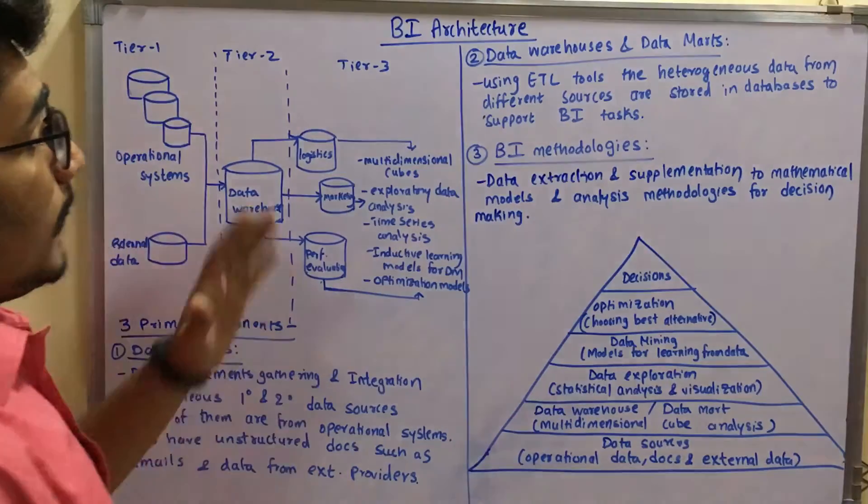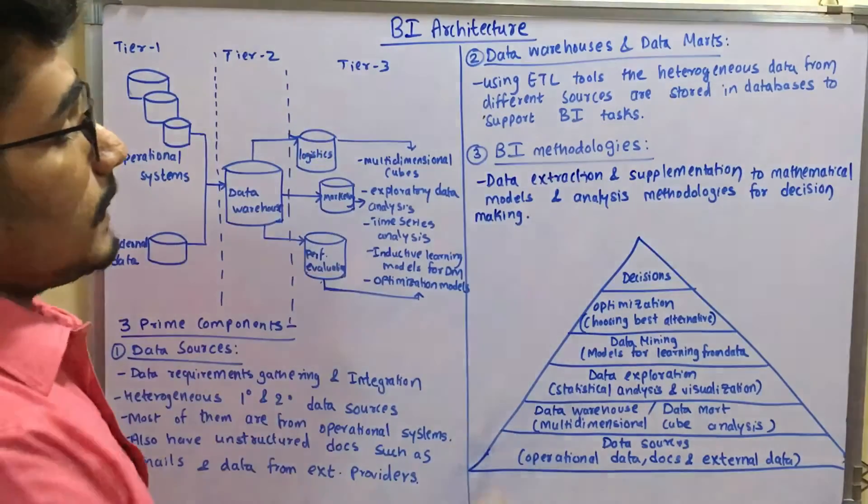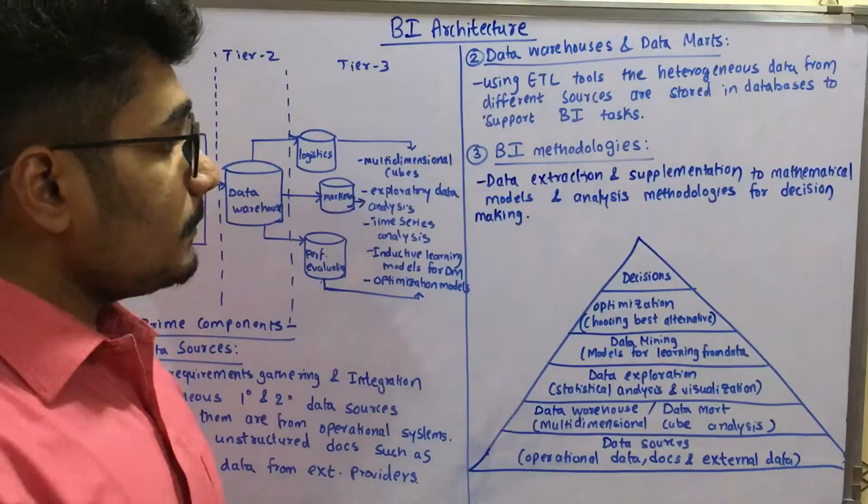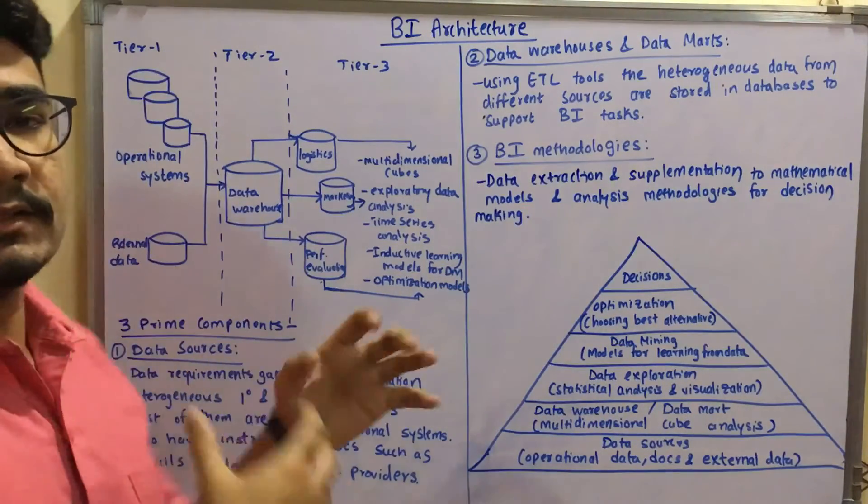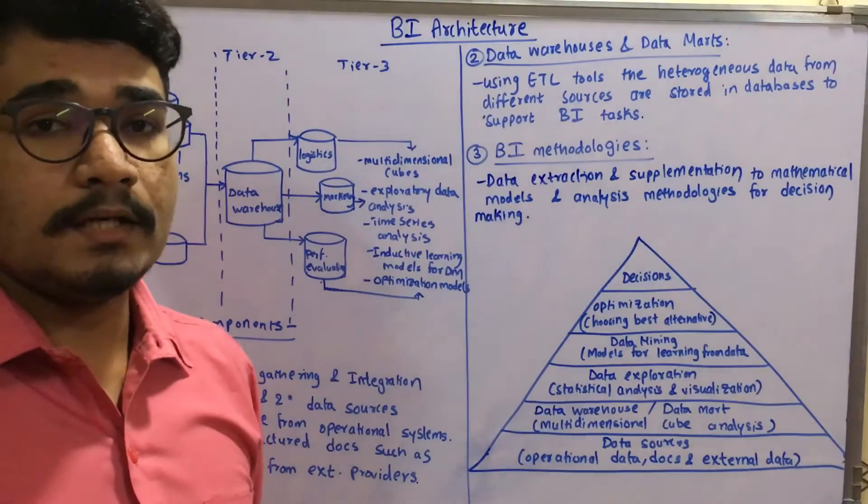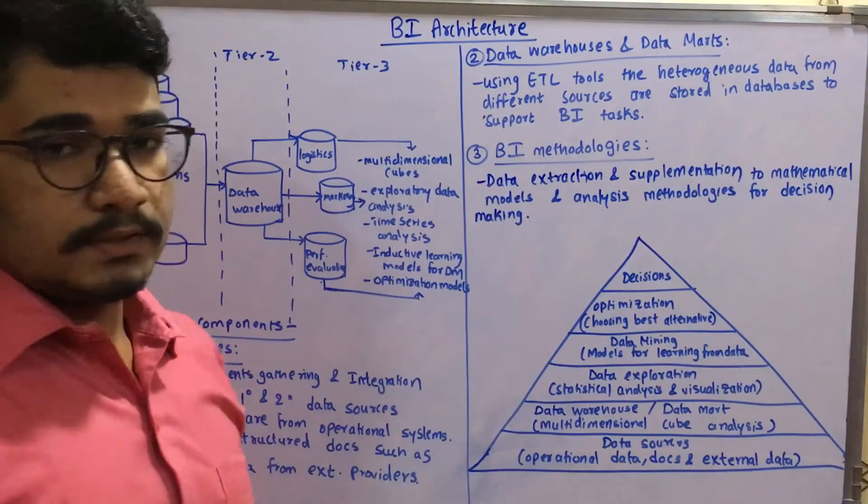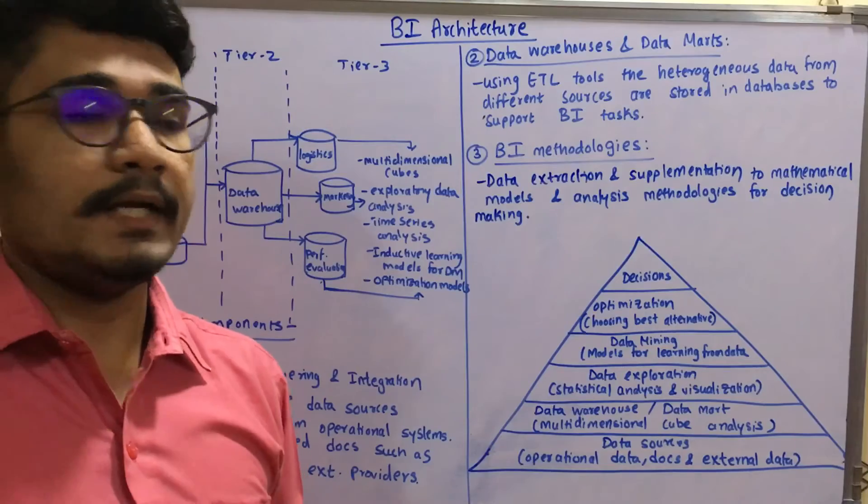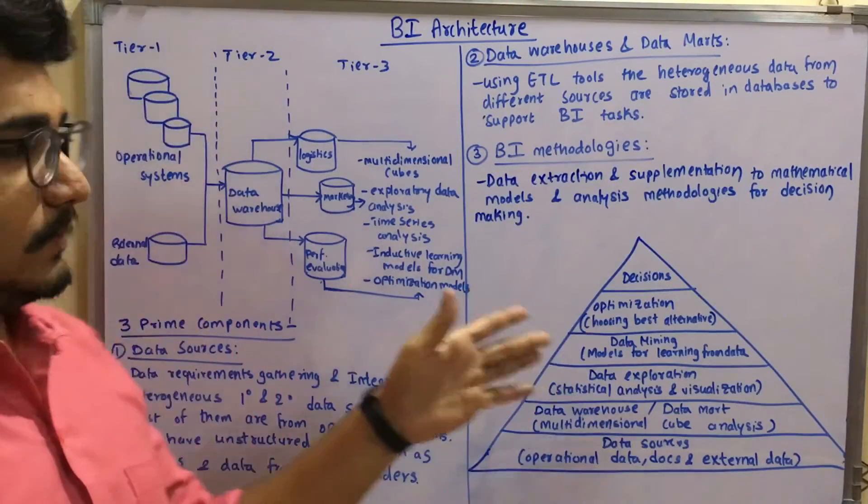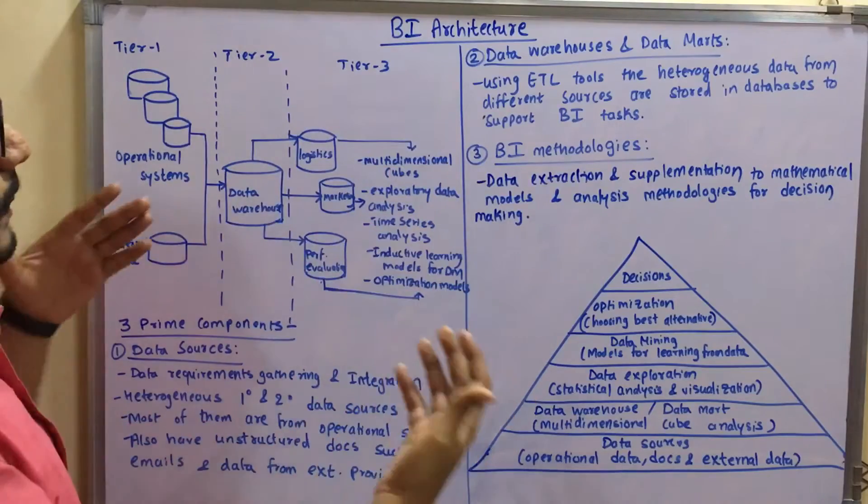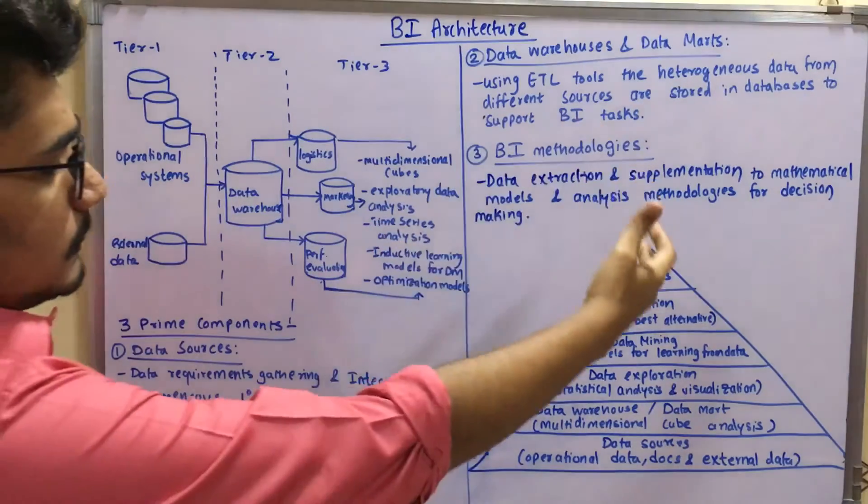Then we have the BI methodologies. That's on Tier 3. That is, we have the data extraction and supplementation to mathematical models. Like you extract the data from all these things and then you supply it to your mathematical models and analysis methodologies, which are the two prime components which we have seen in the BI definition for the decision-making activities.